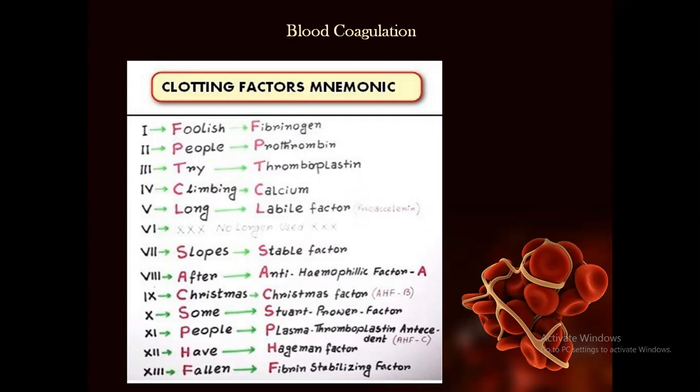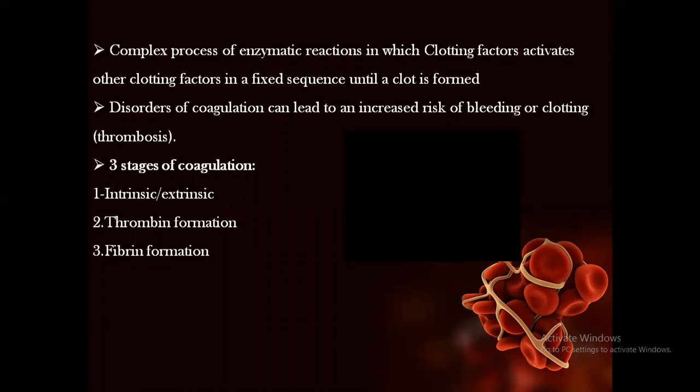Factor 2, P — prothrombin. Factor 3, T — thromboplastin. Factor 4 — calcium. Factor 5 — labile factor. Factor 6 is no longer used. Factor 7 — stable factor. Factor 8 — anti-hemophilic factor A. Factor 9 — Christmas factor. Factor 10 — Stuart-Power factor. Factor 11 — plasma thromboplastin antecedent factor. Factor 12 — Hageman factor. Factor 13 — fibrin stabilizing factor.